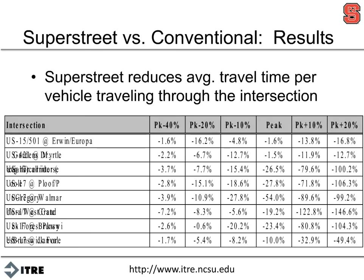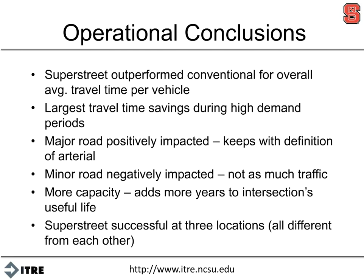The first two sites on top are the single super street sites, and the ones below are the five super streets along the corridor. This shows average travel time for all movements by traffic volume. At low volume situations we don't see a huge improvement with the super street, but when we start getting lots and lots of traffic, look at the improvements — how much they increase.